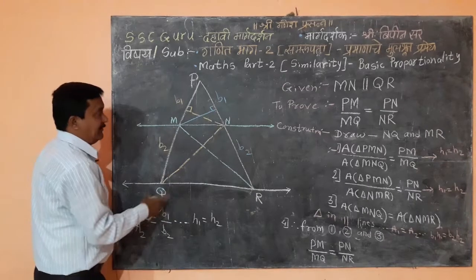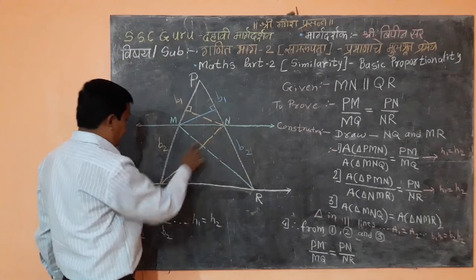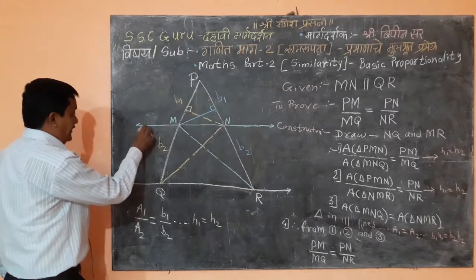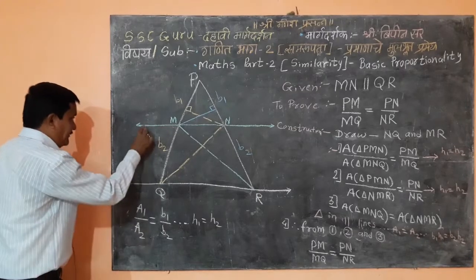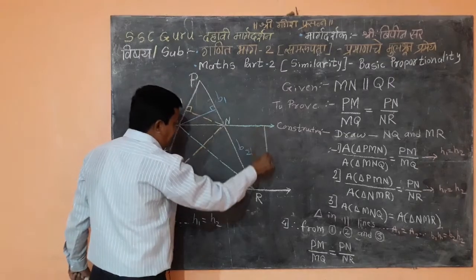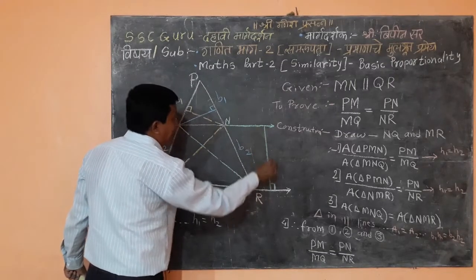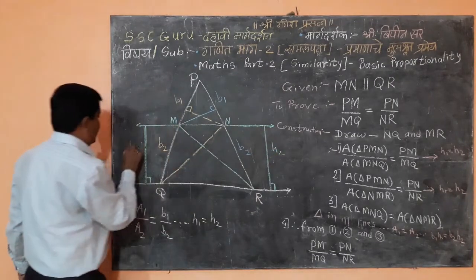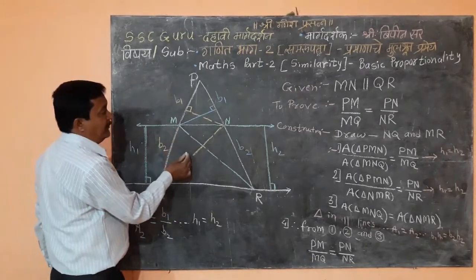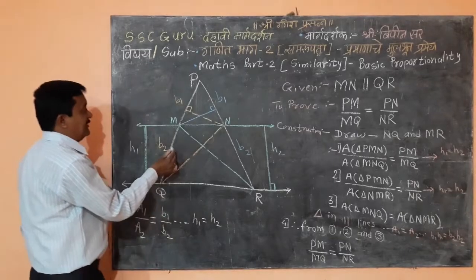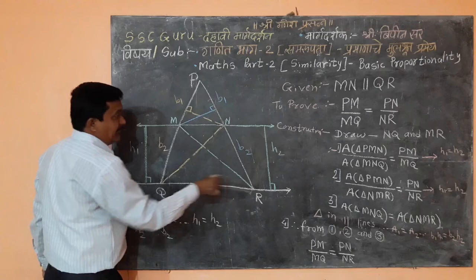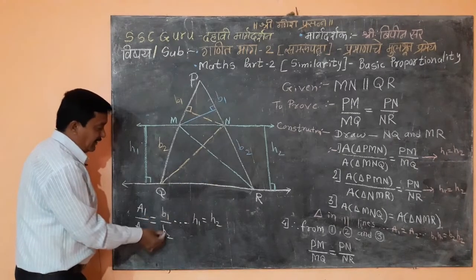Now we know MN is parallel to QR. If MN is parallel to QR, then the height between two parallel lines is always equal. That means H1 and H2 are equal. This means the area of triangles MNQ and MNR are equal, because triangles situated between two parallel lines on the same base have equal areas.